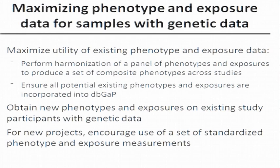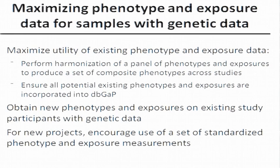We want to maximize the utility of existing phenotype and exposure data. Usually the first step is performing harmonization of a panel of phenotypes. There's probably a finite number of phenotypes and exposures that we could identify — somewhat large, but not out of the realm of possibility — to produce some set of phenotypes that we want to go and harmonize across all studies. Then ensure that all potential existing phenotypes and exposures in the various studies are actually incorporated into dbGaP when possible, as there are phenotypes in studies that haven't been submitted to dbGaP that actually could be if some effort were taken.